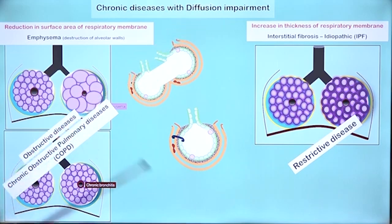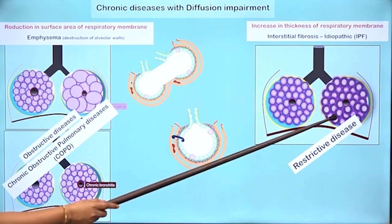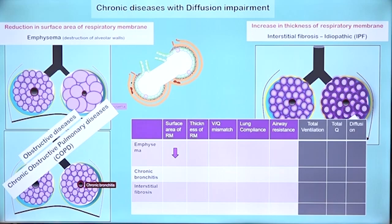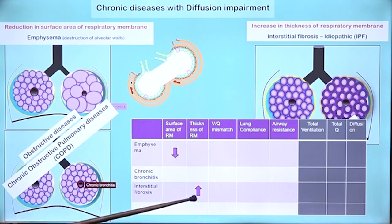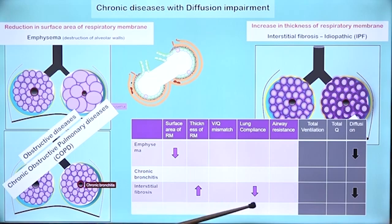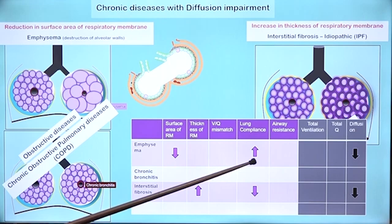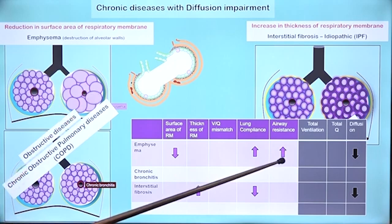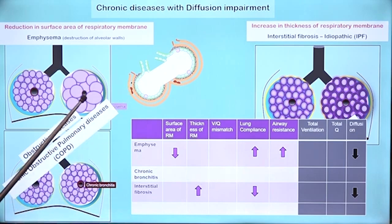With our focus being diffusion impairment: diffusion impairment occurs in emphysema due to loss of surface area, and in interstitial fibrosis due to increase in thickness of the respiratory membrane. You could fill a table to differentiate between the pathologies and manifestations of these diseases. In emphysema, surface area is lower; in interstitial fibrosis, the respiratory membrane is thicker — in both conditions there is diffusion impairment affecting arterial oxygen but not carbon dioxide. Lung compliance is lower in interstitial fibrosis, whereas in emphysema it can actually be higher because alveolar walls have been destroyed, giving less resistance to expansion. Airway resistance is higher in emphysema due to narrowing of the bronchioles.